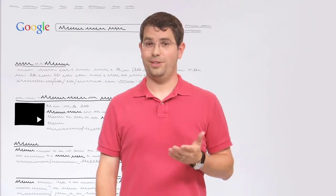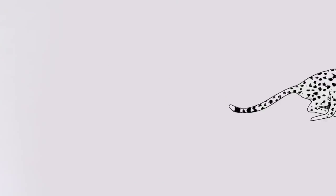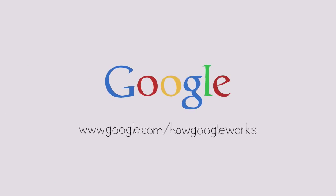Which, in this case, the cheetah's top running speed is more than 60 miles an hour. Thanks for watching. I hope this made Google a little bit more understandable.